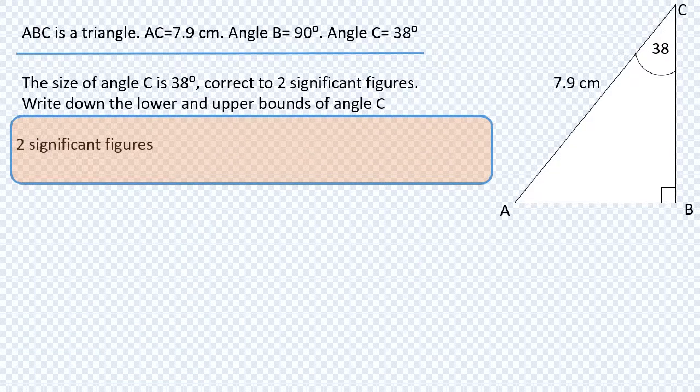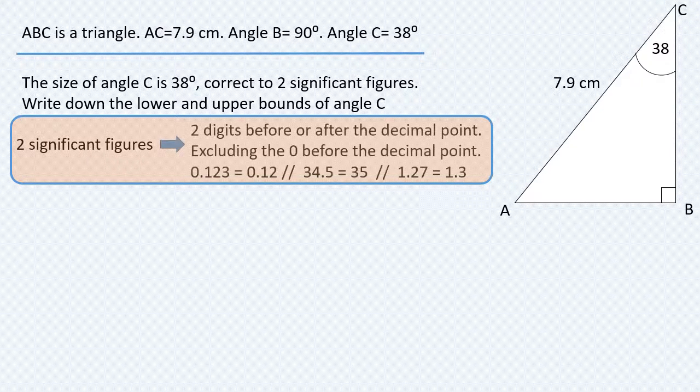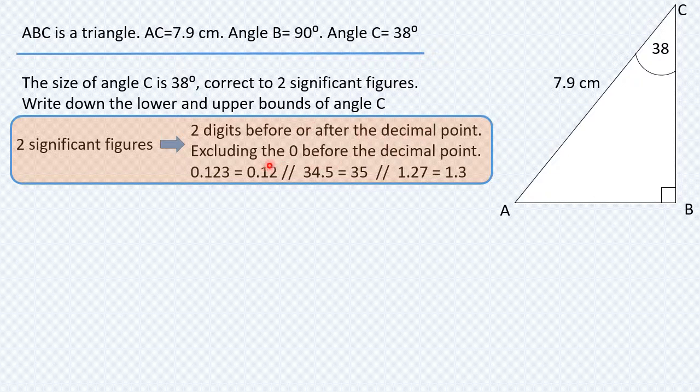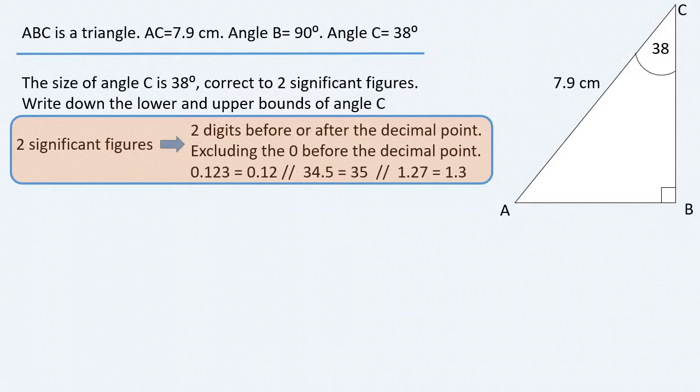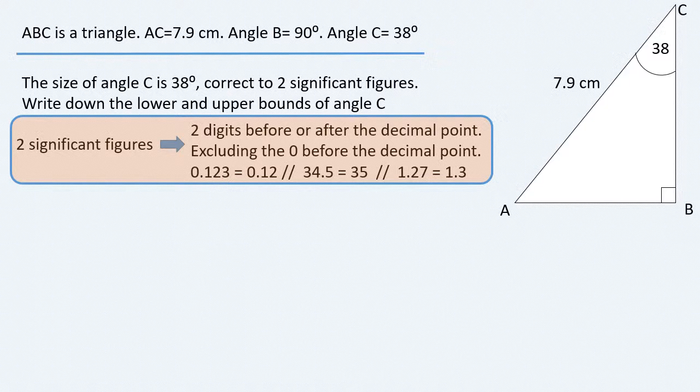First of all, what do we mean by 2 significant figures? 2 significant figures means two digits before or after the decimal point, excluding the zero that comes before the decimal point. So, if, for instance, we have 0.123, and we want to find this number correct to two significant figures, it becomes 0.12. We don't round up this 2 to 3, because the number that comes after it, which is 3, is not equal or greater than 5.